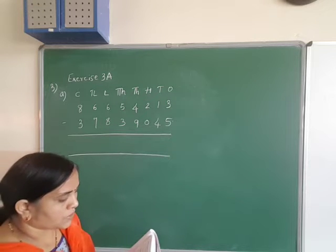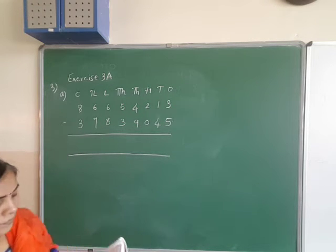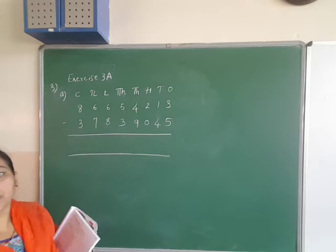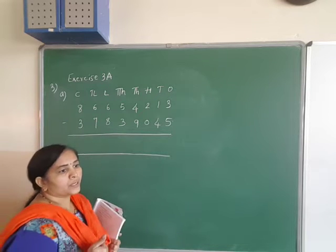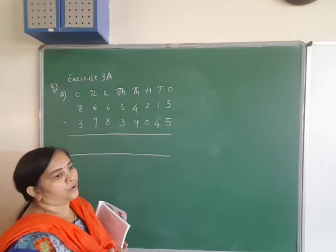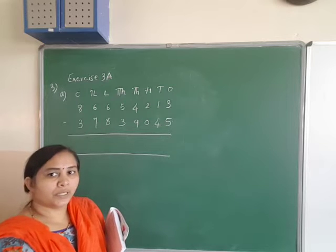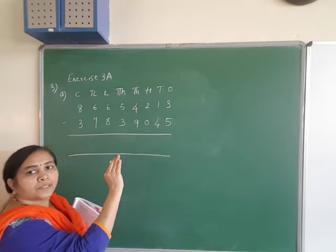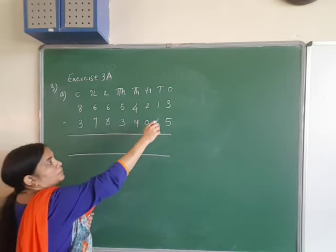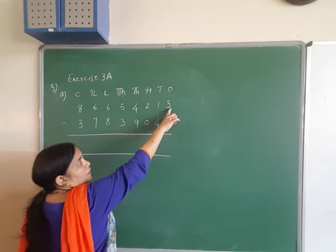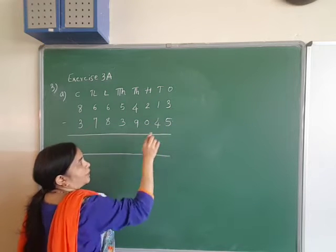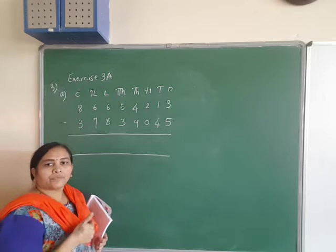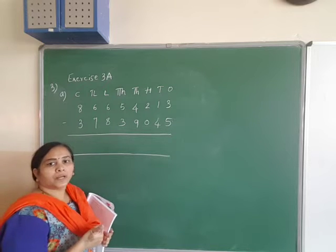To subtract these two numbers, the rule is: you always subtract from the bigger number to the smaller number. So here, the ones digit: 3 minus 5 — we cannot subtract. So you have to carry over a 10.